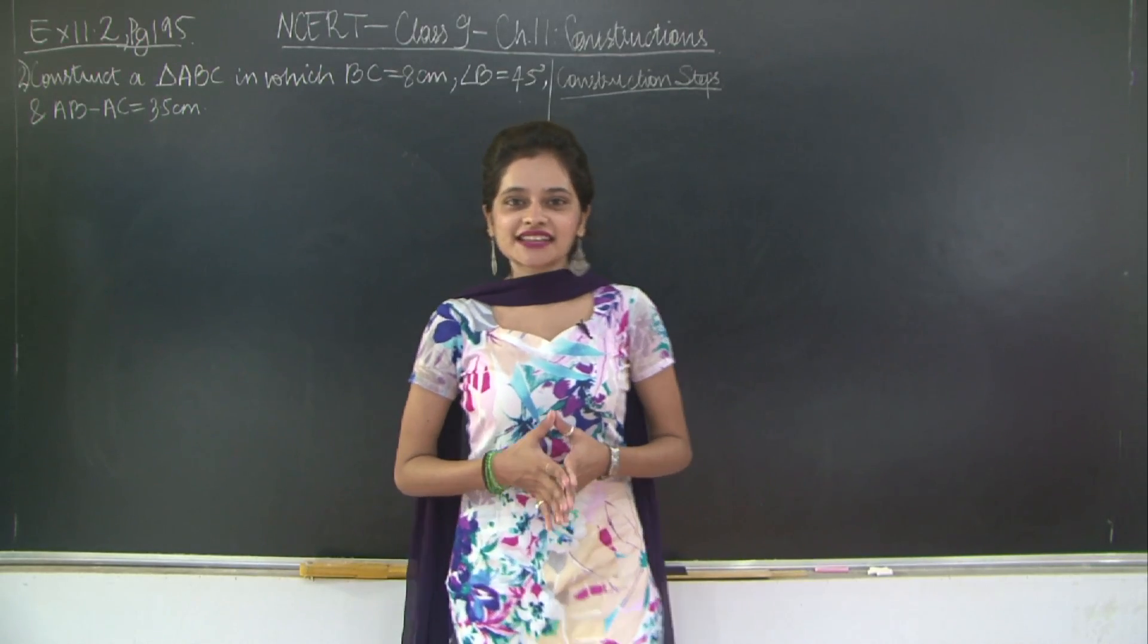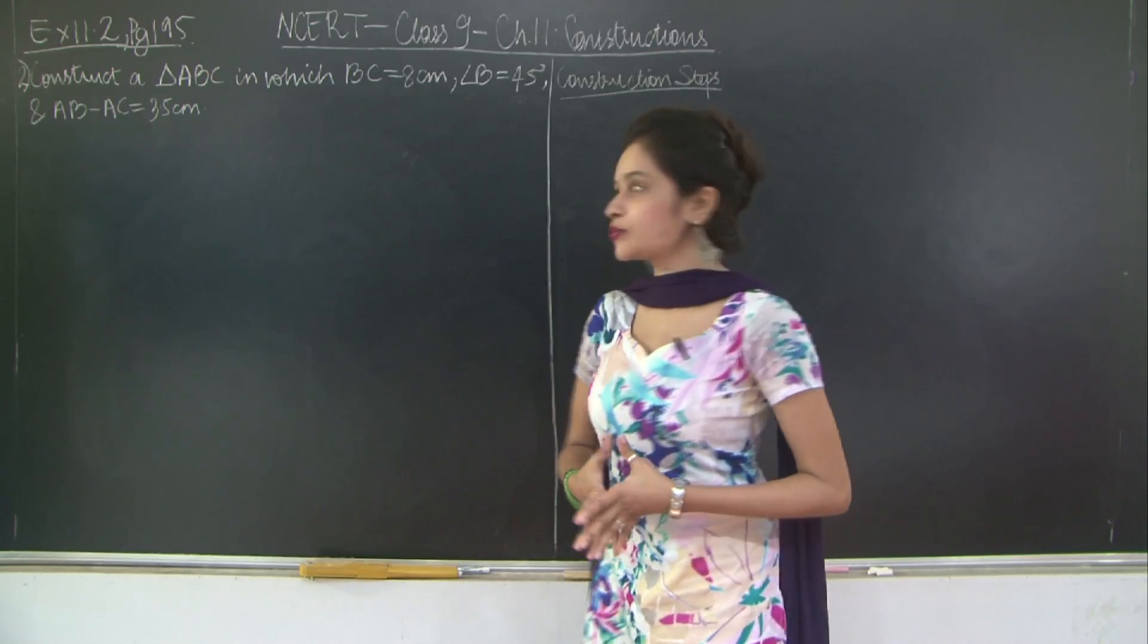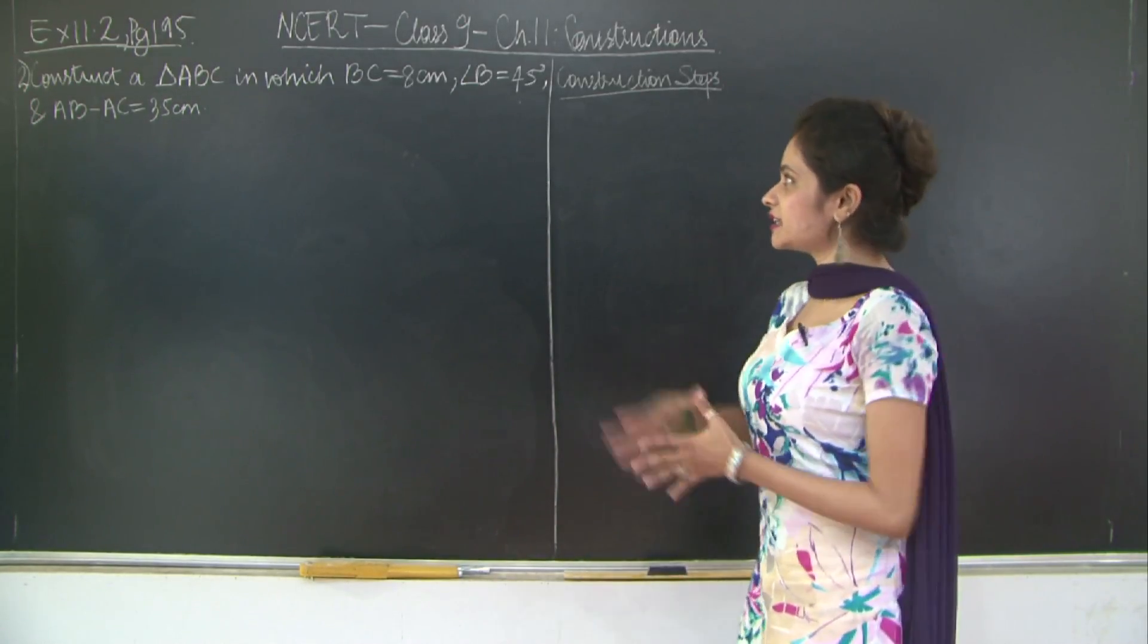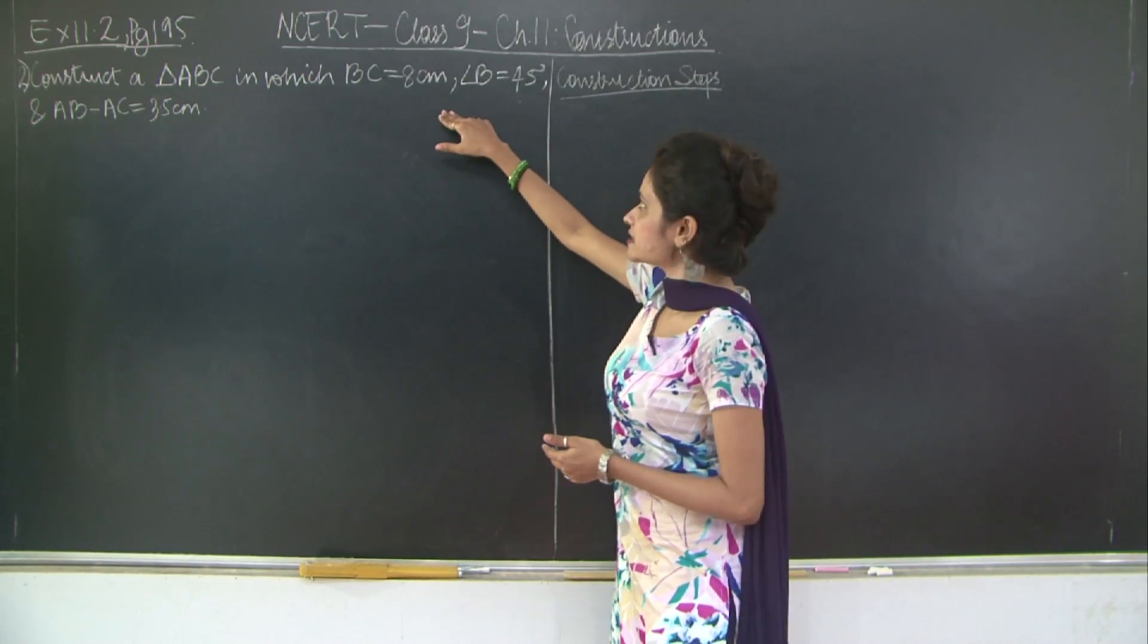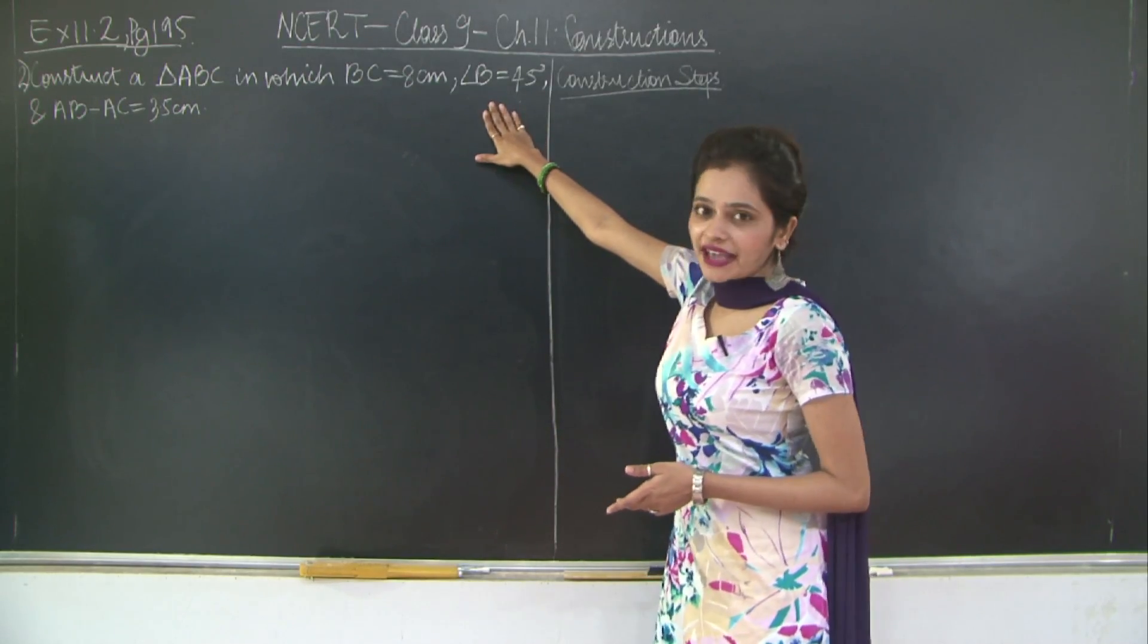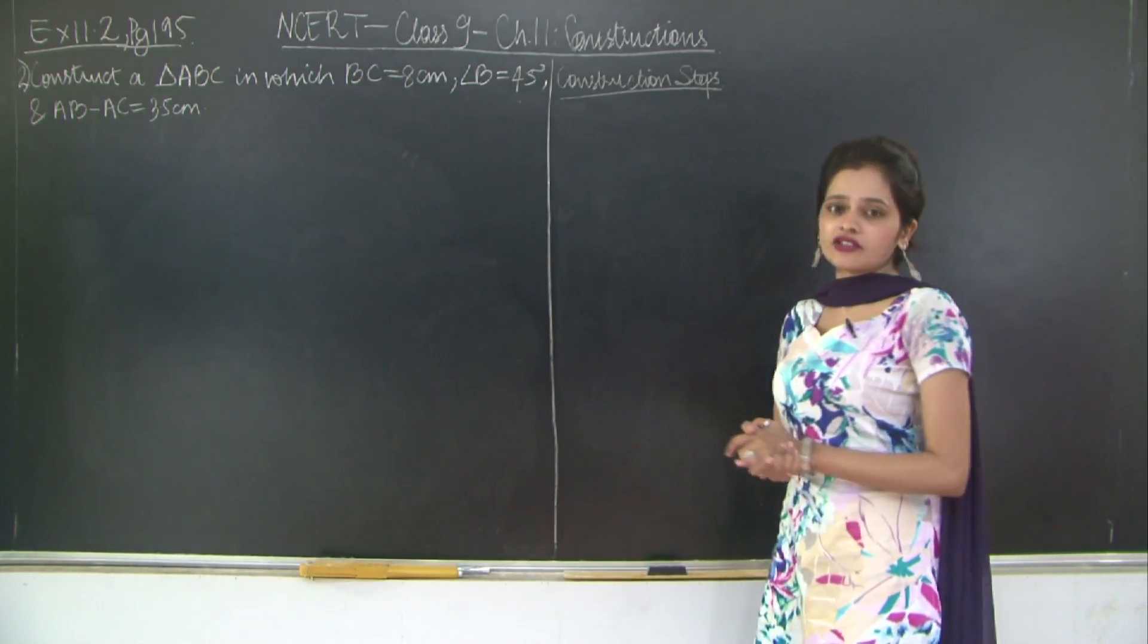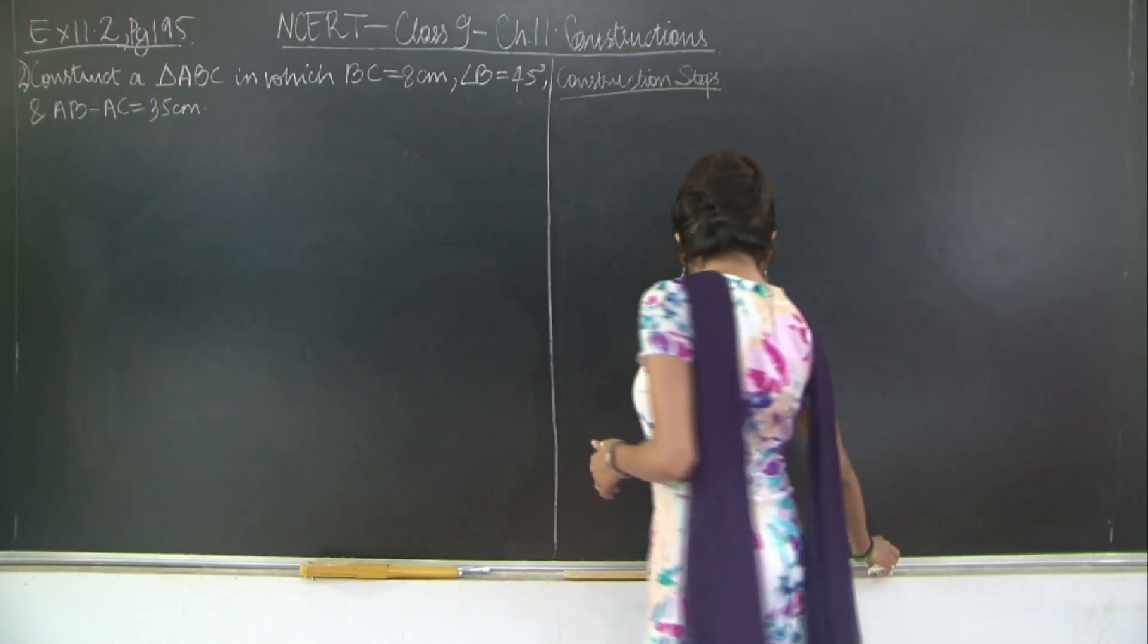Hello students, welcome back. Let us continue with exercise 11.2, question number 2 of chapter 11. We need to construct a triangle ABC in which BC is 8 centimeters, angle B is 45 degrees, and the difference of two sides is 3.5 centimeters.